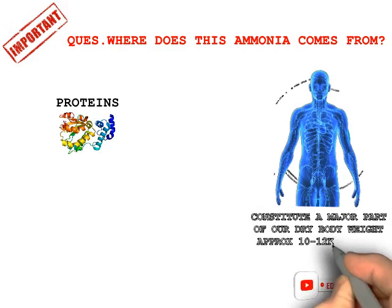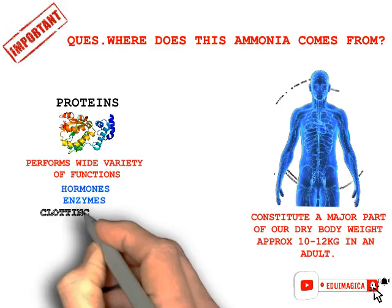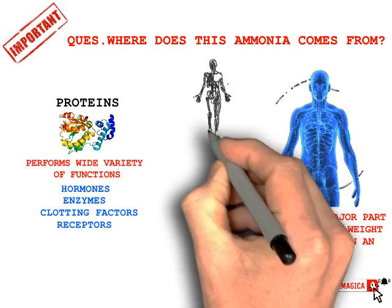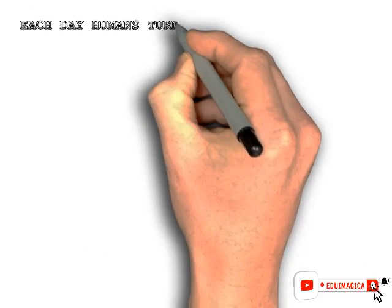These proteins perform a wide range of functions in the body. In almost every biological process, proteins are required — hormones, enzymes, clotting factors, receptors — all are proteins. About half of the body protein is present in the skeleton and connective tissue, whereas the other half is intracellular. Each day, humans turn over about 1–2% of their total body protein, which is basically the muscle protein.